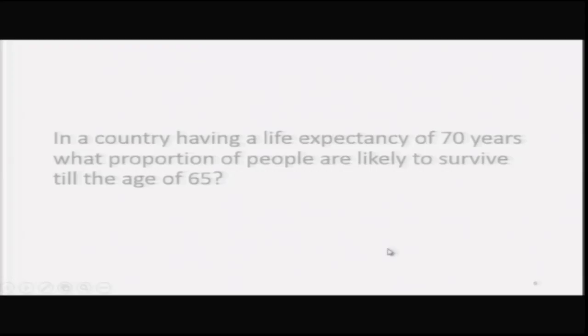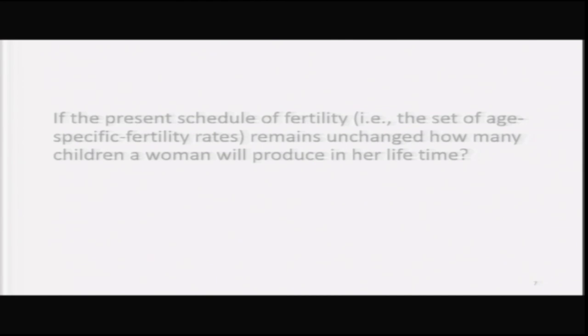Another question answerable by building models: in a country with life expectancy of 70 years — India is in that situation — what proportion of people are likely to survive till age 65, or how many more years of life can those already aged 65 expect to live? Also, if the present schedule of age-specific fertility rates remains unchanged, how many children will a woman produce in her lifetime? By adding age-specific fertility rates we arrive at the total fertility rate, which is also a kind of model.